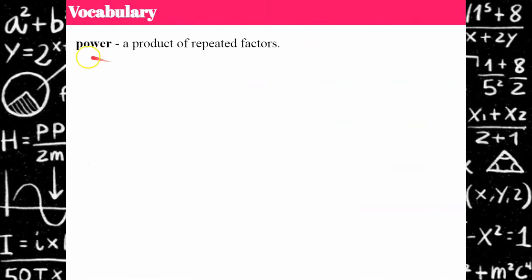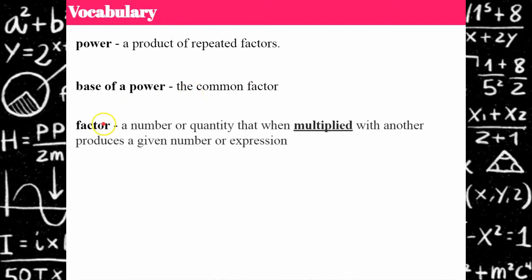A few more words. A power is a product of repeated factors. The base of a power is the common factor. What is a factor? It's a number or quantity that when multiplied with another produces a given number or expression. So when you hear or see the word factor, automatically know that it's meaning multiplication. An exponent tells the number of times to multiply the base by itself.